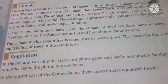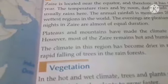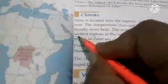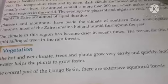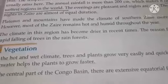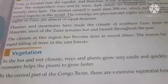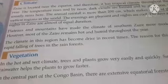The annual rainfall is more than 200 cm, which makes Zaire one of the wettest regions in the world. The evenings are pleasant and nights are cool. The days and nights in Zaire are almost equal in duration.